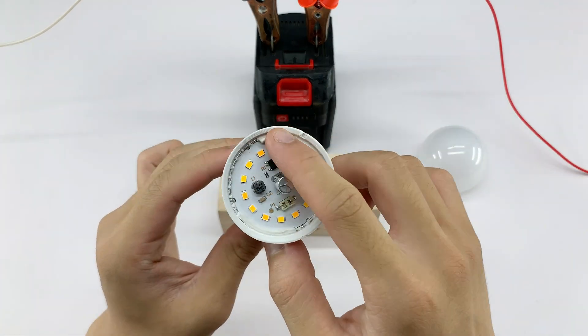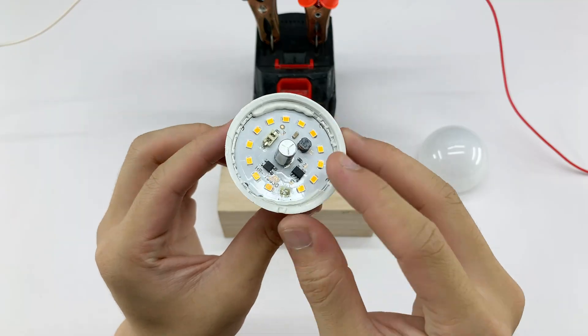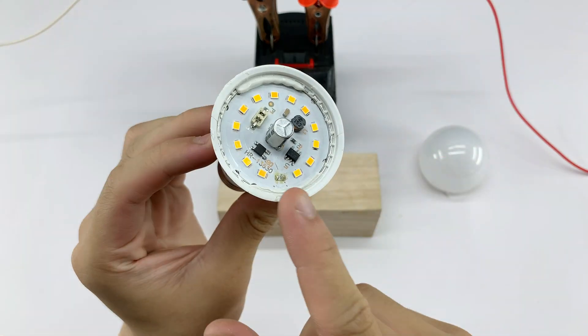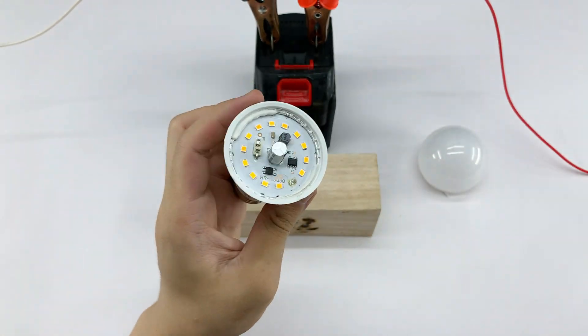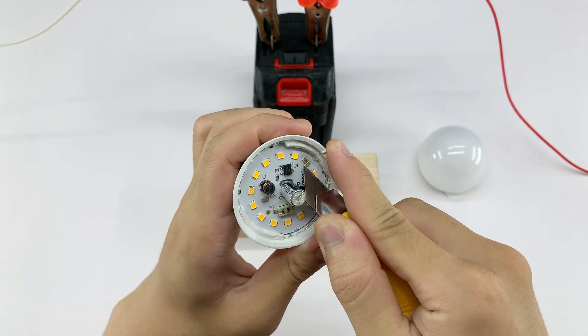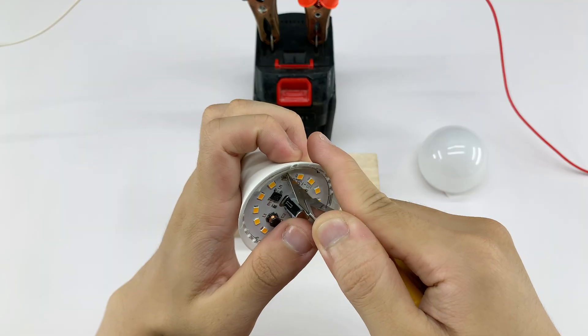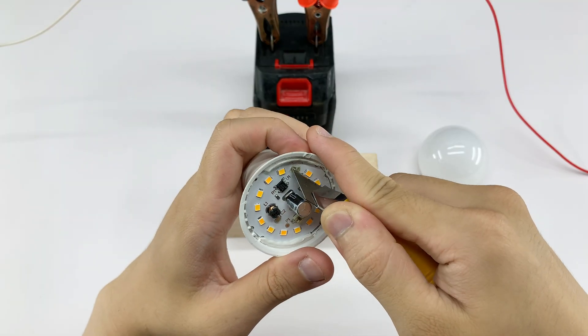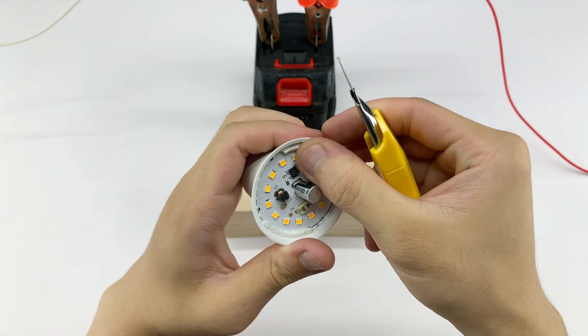I'm holding the bulb close to the screen, can you see the damaged LED chip? That's the culprit keeping the bulb from lighting up. Before soldering to repair it, we'll clean the surface of the LED chip. This removes dirt or oxidation, ensuring a strong connection and better conductivity when we solder.